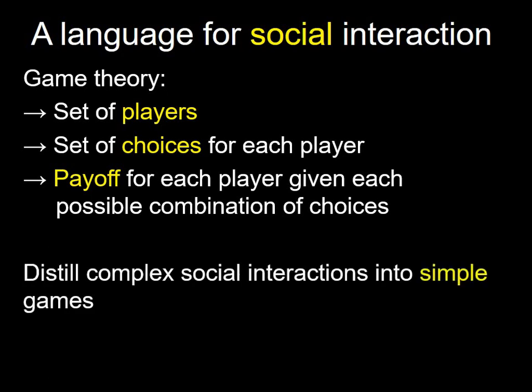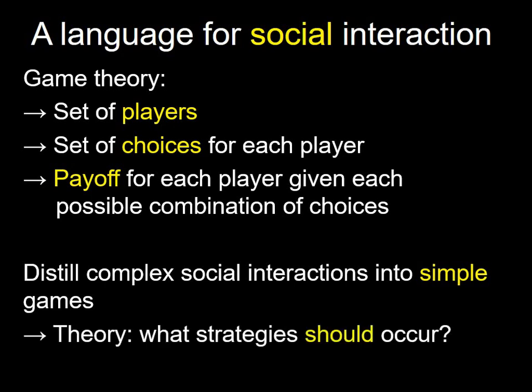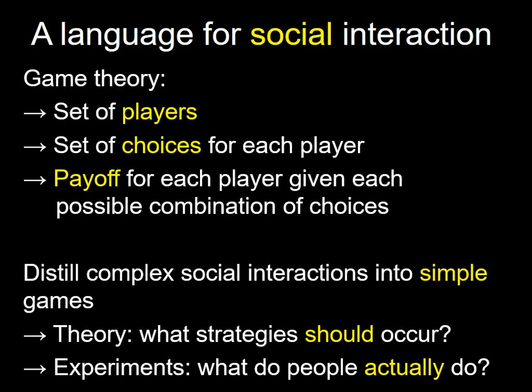Game theory lets you distill any complicated social interaction into a simple essence in terms of players, choices, and payoffs, then see what happens. There are two broad uses: theory — using theoretical or computational approaches to say what should happen once a game is defined — and an experimental literature using games to see what actually happens when people play them.